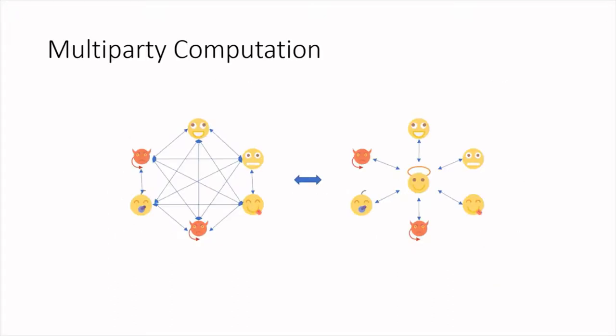Let me start by recalling what MPC is about. In the problem of secure multi-party computation, there are N parties. Each party has a private input, they are connected via some communication network and want to jointly compute a function in such a way that nothing about the inputs is revealed. They basically want to achieve what can be achieved in an ideal setting with a trusted party, even when some of the parties are corrupted.